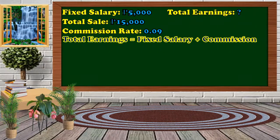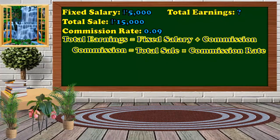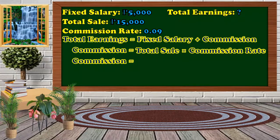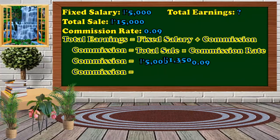In this case, we don't have the value for our commission. Remember that the commission rate is different from the commission amount or value. So first we have to solve for our commission. The commission is equal to the total sale times the commission rate — that is 15,000 multiplied by 0.09. The commission equals 1,350 pesos.